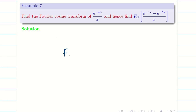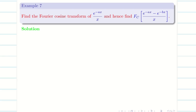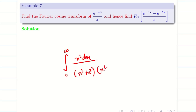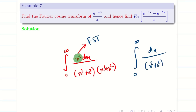In the first video, we dealt with the Fourier cosine transform of e^(-ax) and the Fourier sine transform of e^(-ax). In the second video, we dealt with the integral from 0 to infinity of x² dx divided by (x²+a²)(x²+b²) etc. The clue is: if the numerator has the variable x, use Fourier sine transform; if the numerator is simply dx divided by (x²+a²)(x²+b²), use Fourier cosine transform. These are the quick recaps for videos 1 and 2.